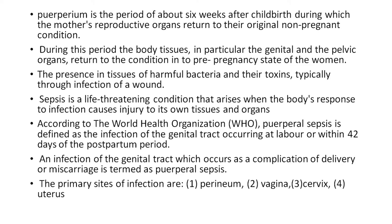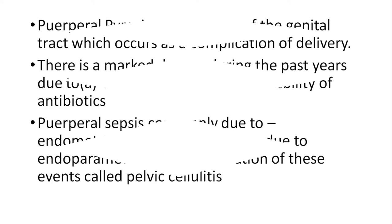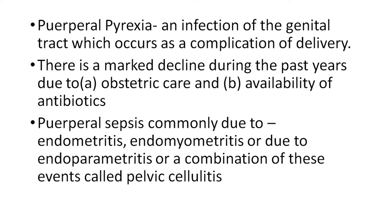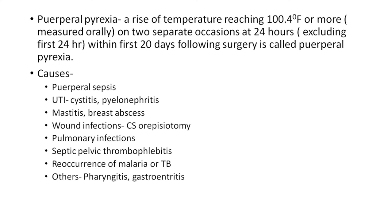The primary sites of infection are the perineum, vagina, cervix, and uterus. There has been a marked decline in puerperal sepsis during past years due to improved obstetric care and availability of antibiotics. Puerperal sepsis is commonly due to endometritis, endomyometritis, or endoparametritis, or a combination of these events called pelvic cellulitis.